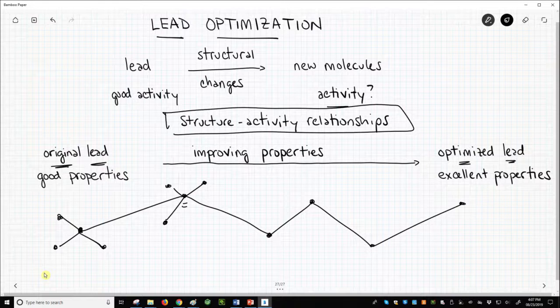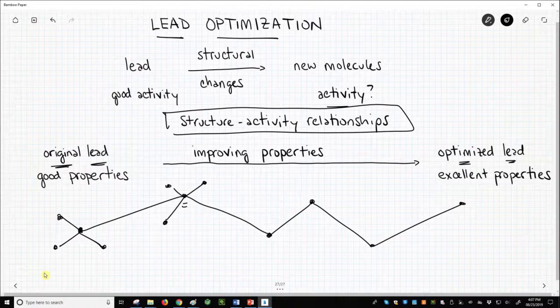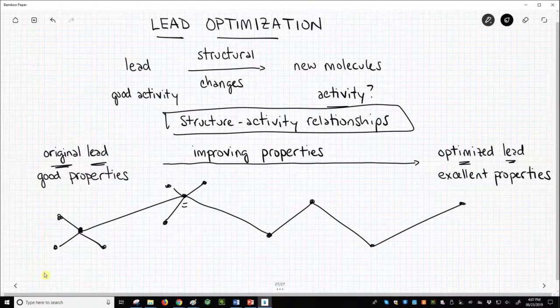Once a lead enters the clinic, the lead optimization process will continue in the laboratory. Human trial data, both good and bad, will further inform the optimization team about additional changes that might be needed in the lead that is in the clinic.